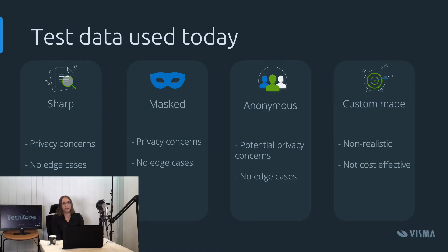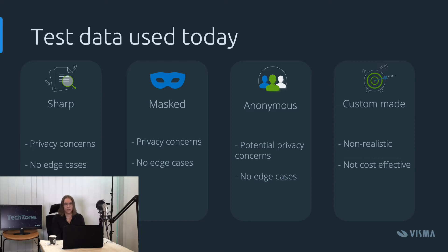There are several options for test data today. Sharp data is no longer a good idea because of privacy concerns, and it rarely contains edge cases, so we can disregard it if you're working with sensitive information. Another option is masked data, which is simply sharp data where certain parameters have been replaced by pseudonyms. This should give some privacy, but it is often still possible to identify people based on the other parameters that haven't been masked, so there are still several privacy concerns with masked data.